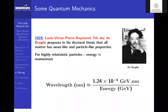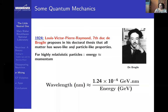Particle-wave duality was proposed by de Broglie in his PhD thesis in 1924. Those of you doing PhDs today — PhDs then were different: in 1924, you could discover a major property of matter for your PhD. He wrote down the wavelength: this is 1924, the birth of quantum mechanics and wave-particle duality, where these concepts became quantitative and predictive.